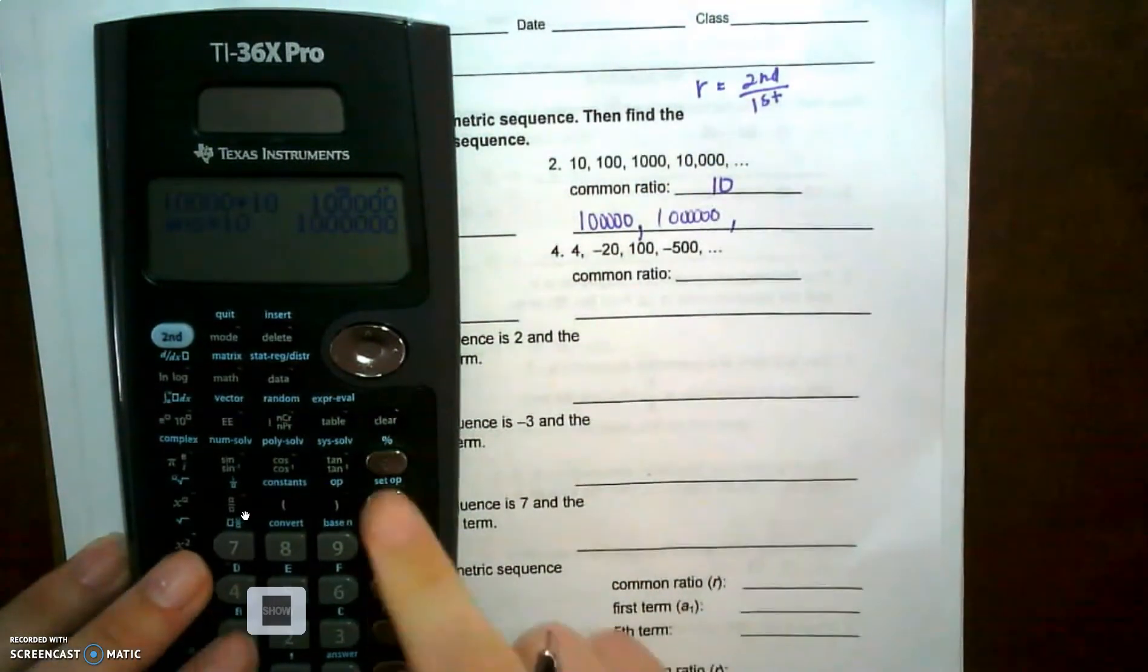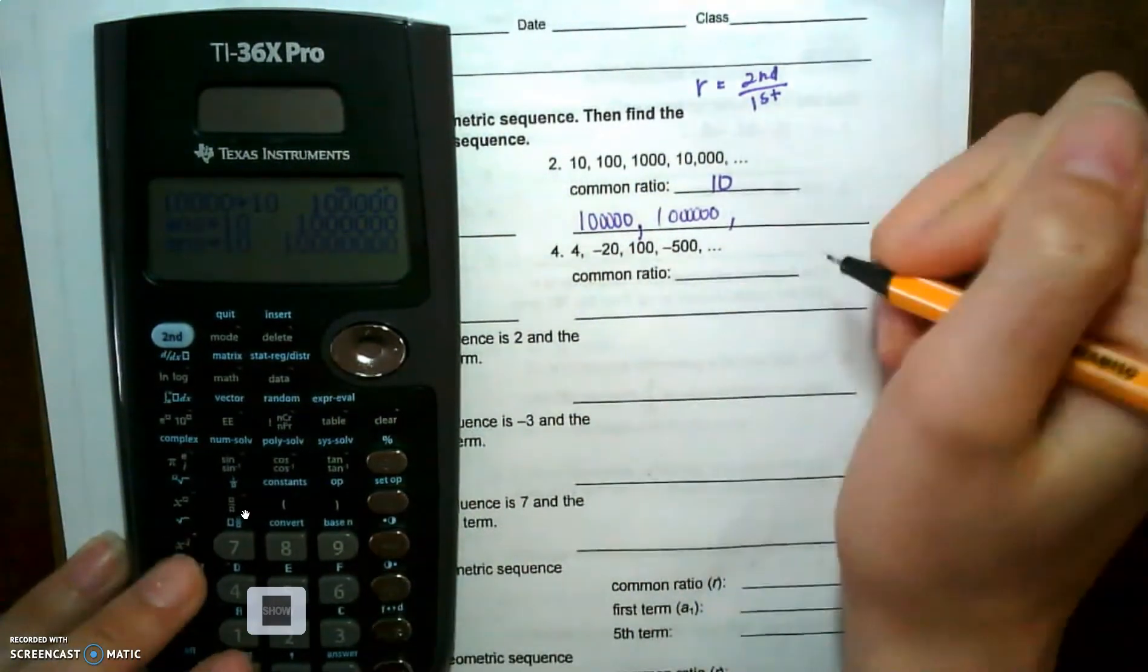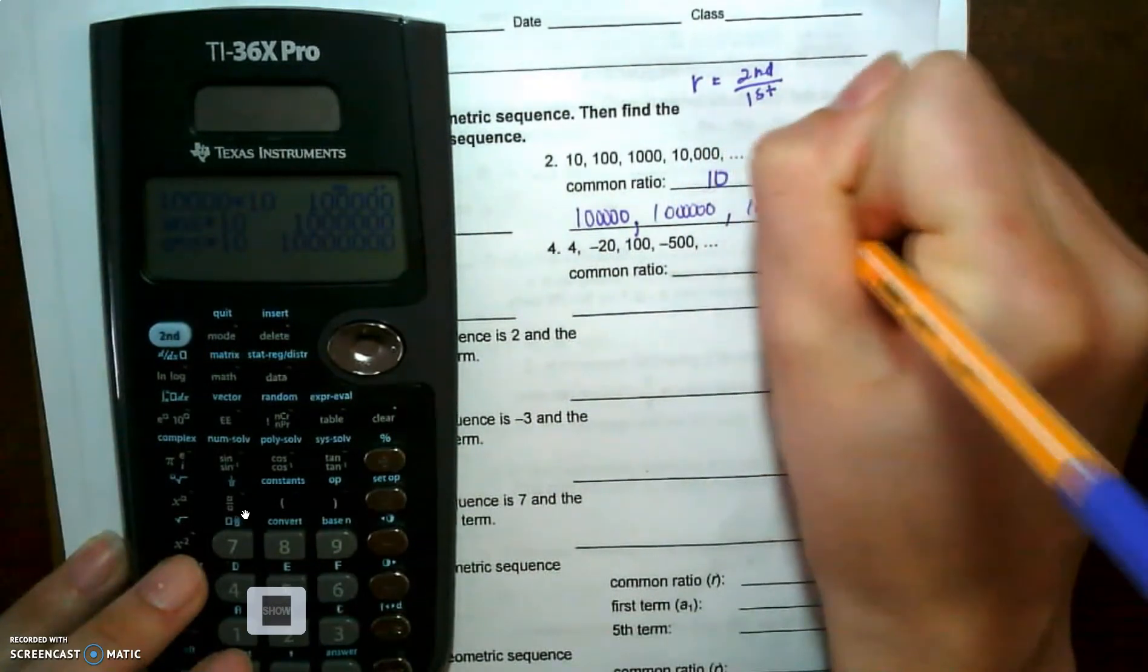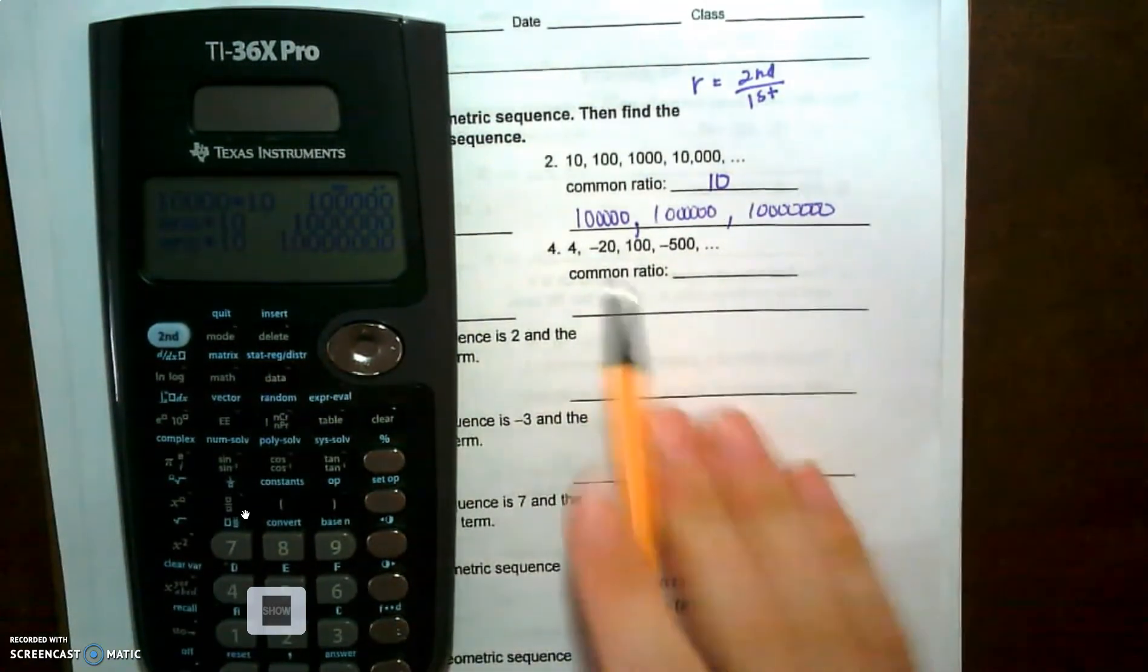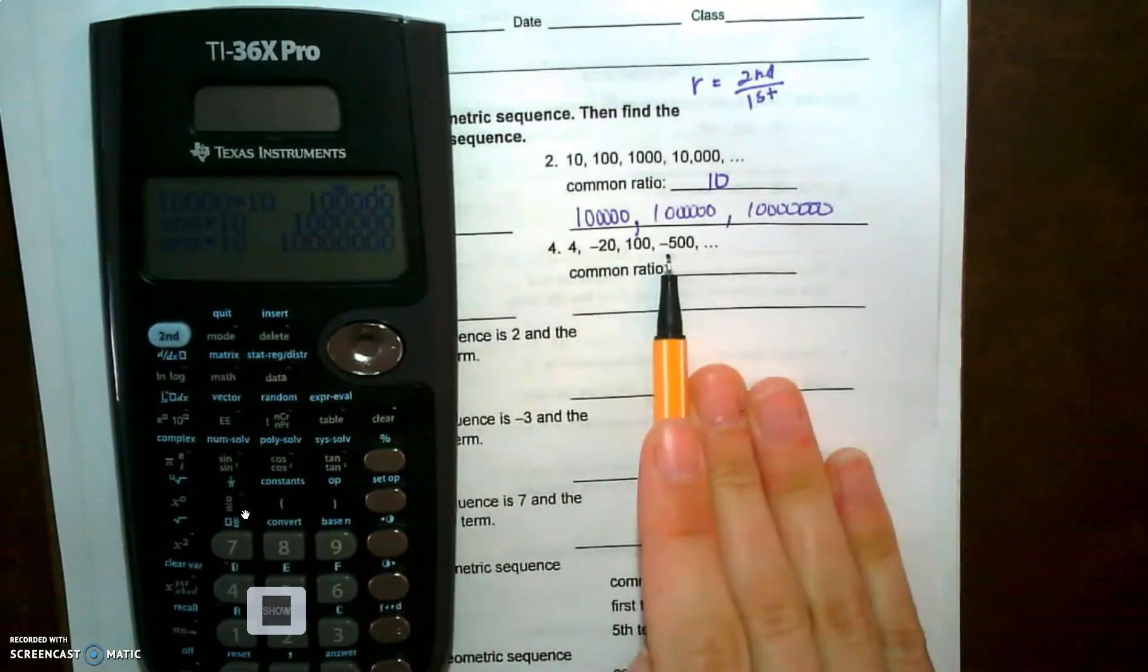Then we're going to take that and multiply it by ten to get those next three numbers. And number four, our common ratio is going to be negative because we keep changing signs.